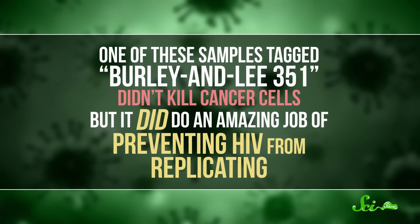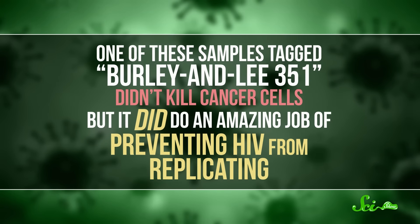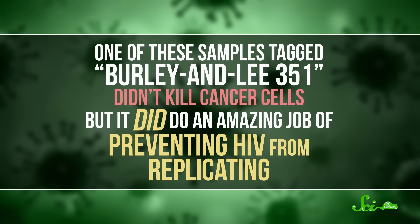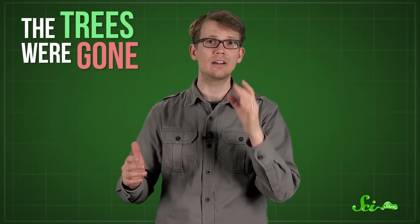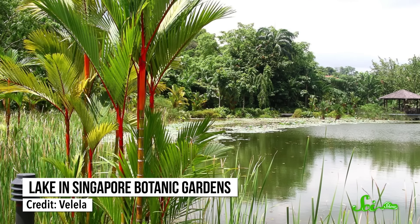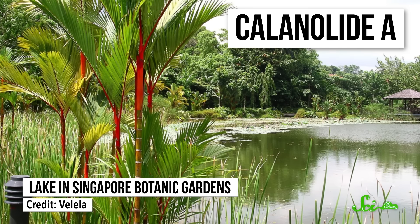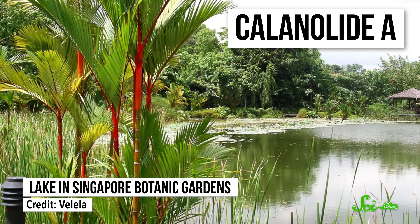One of these samples, tagged Burley and Lee 351, didn't kill cancer cells, but it did do an amazing job of preventing HIV from replicating. So the collectors high-tailed it back to the forest, only to find it gone, cut down for firewood or building. Extracts from similar trees didn't have the same effect, because they were slightly different species. It was only salvaged when a few trees of the right species were found at the Singapore Botanical Gardens. The drug is called Calanolide A, and it's currently in Phase II clinical trials, and owned by the local Malaysian government.